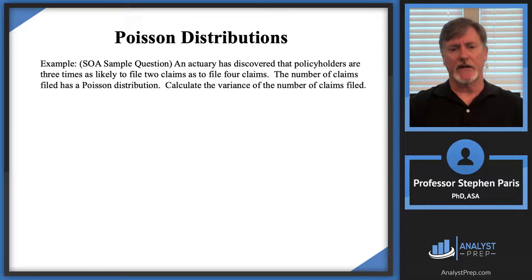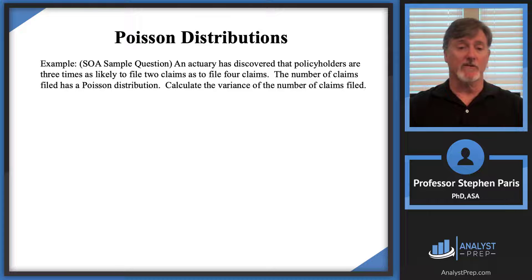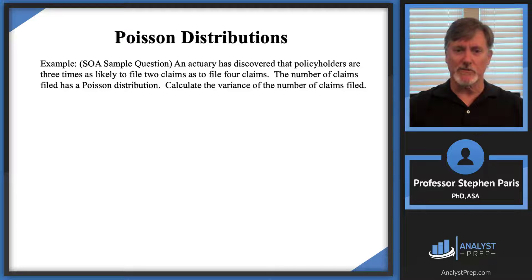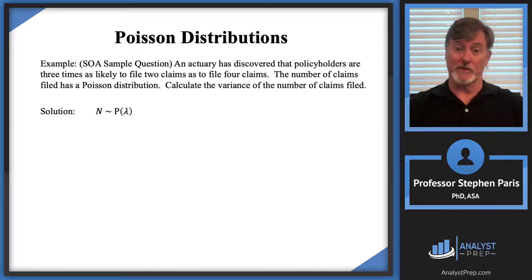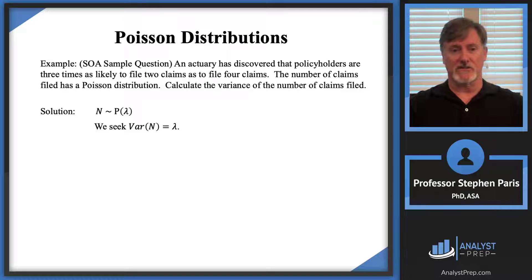Let's look at an example from an SOA sample question for exam P. An actuary has discovered that policyholders are three times as likely to file two claims as to file four claims. The number of claims filed has a Poisson distribution. We're asked to calculate the variance of the number of claims filed. Since N ~ Poisson(λ), the variance is just lambda, so we need to find the value of lambda.